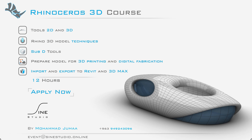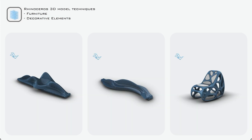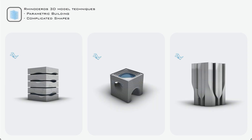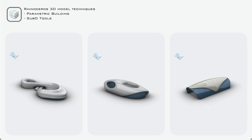Moreover, we will prepare models for 3D printing and digital fabrication. You will get everything related to the course — videos and files. You can prepare execution drawings and digital fabrication using 2D elements and commands in Rhino. You can also create 3D models related to furniture or decorative elements. We will make many complicated objects like parametric buildings or complex shapes using sub-D tools and many advanced commands to get the same result.